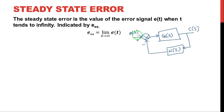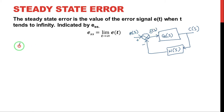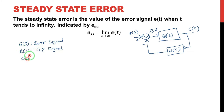Now see here there is an input R(s), output C(s), the forward gain G(s), and feedback gain H(s). The comparison of the input signal to the feedback signal is called the error signal. So this is E(s) — E(s) is called the error signal. R(s) is the input signal, C(s) is the output signal. So the error signal is the comparison of input signal to the feedback signal. Here the feedback signal is H(s) multiplied by C(s).